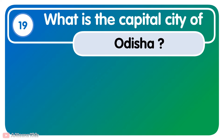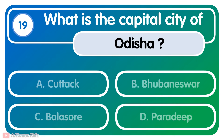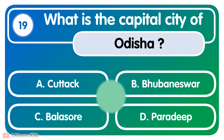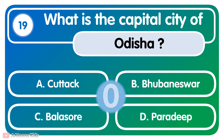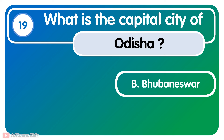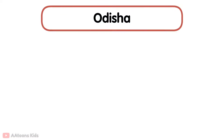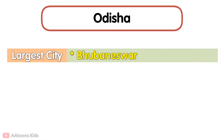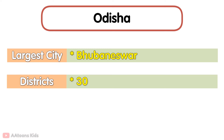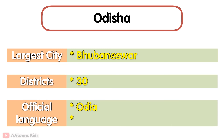What is the capital city of Odisha? Bhubaneswar. Bhubaneswar is the capital city of Odisha. The largest city in Odisha is Bhubaneswar. It has 30 districts. Its official language is Odia. The most famous temple, Puri Jagannath Temple, is located in Odisha.